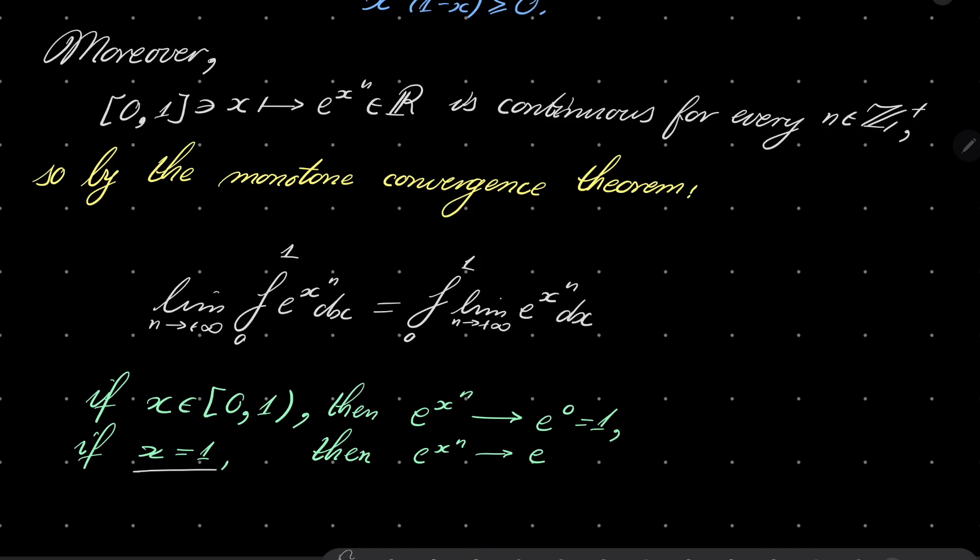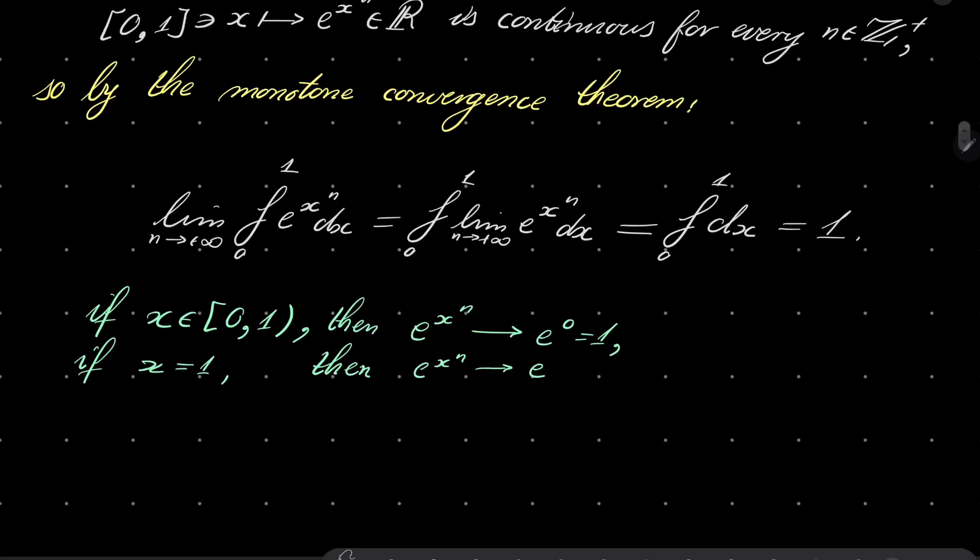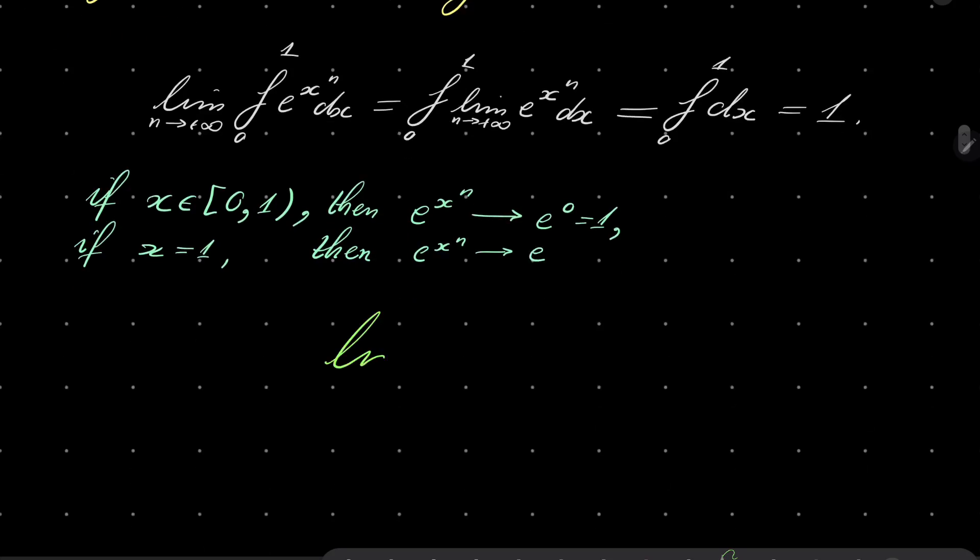So, when computing the integral, we can ignore this single argument, and we can write that it's integral from 0 to 1 of 1, just 1, and that is, of course, 1. This is our answer, our limit of integrals equals 1, and that closes our problem.